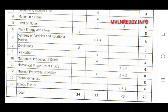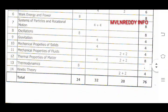Total is eight marks. Next oscillation and next gravitation four marks. Next mechanical properties of solids four marks. Mechanical properties of fluids two marks. Next thermal properties of matter eight marks.